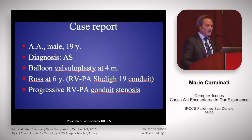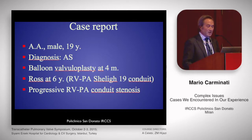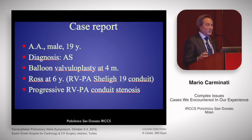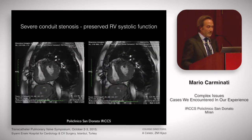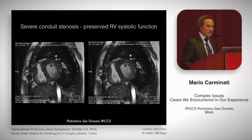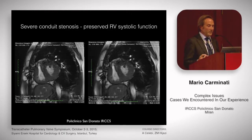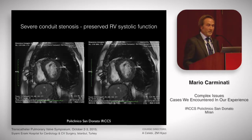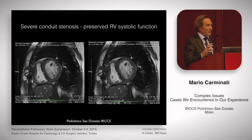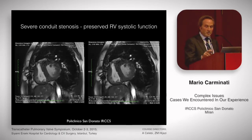The last case is a young patient with an initial diagnosis of aortic stenosis who had balloon valvuloplasty for months, then a Ross procedure at 6 years of age. The surgeon placed a shelhigh conduit, 19 millimeters, between the right ventricle and pulmonary artery. During follow-up he experienced conduit stenosis. The MRI shows a really hypertrophied right ventricle with preserved systolic function and obstruction of the distal part of the conduit close to the bifurcation.